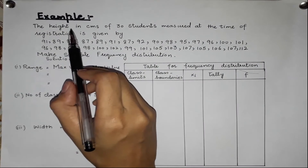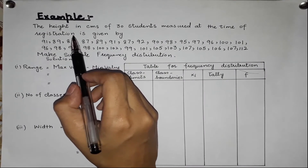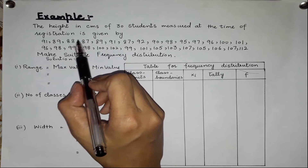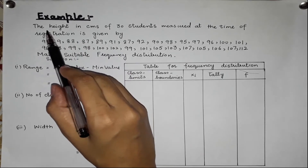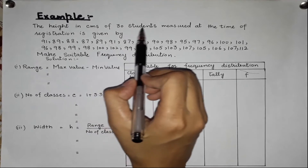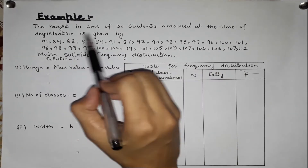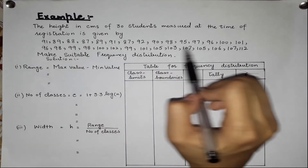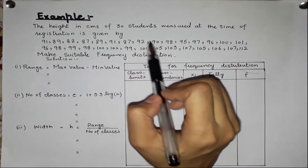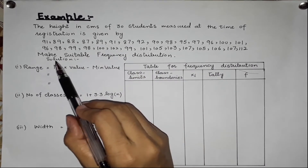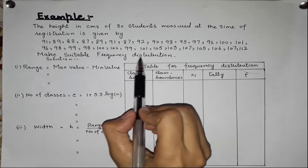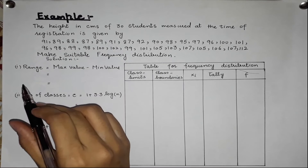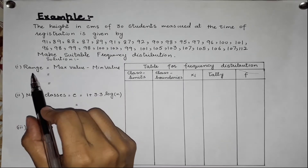This is our example. Now let's solve it. I will show you about frequency distribution. The height in centimeters of 30 students measured at the time of registration is given. We have the height of 30 students and we have to find a suitable frequency distribution.